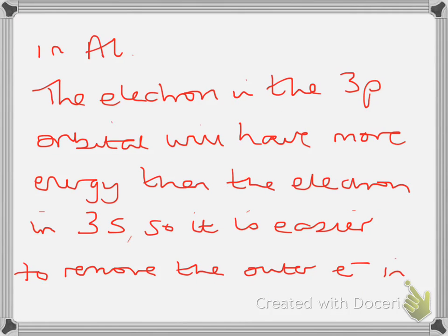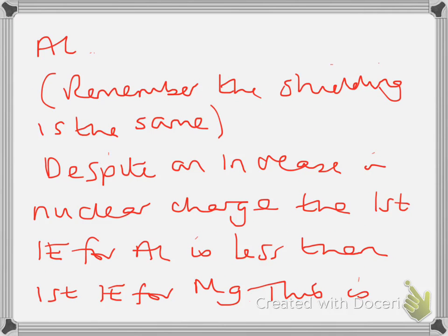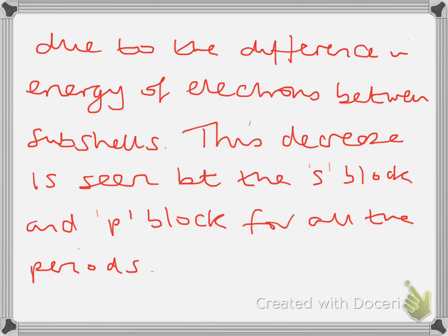The electron in the 3p orbital will have more energy than the electron in the 3s so it's easier to remove the outer electron in aluminium. Remember in these cases the shielding is the same. So despite an increase in nuclear charge the first ionisation energy for aluminium is less than the first ionisation energy for magnesium. This is due to the difference in energy of the electrons between the subshells. This decrease is seen between the s block and the p block elements for all the other periods.